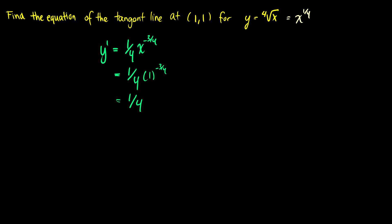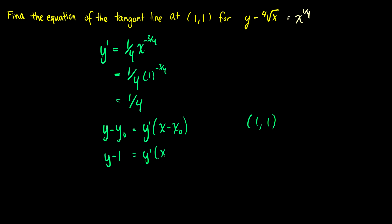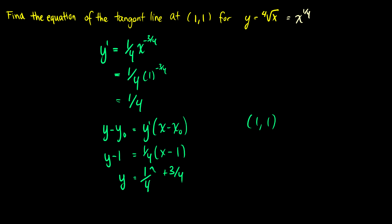Our tangent line equation is y minus y₀ equals y prime times (x minus x₀). We're looking at the point (1, 1), so y minus 1 equals (1/4)(x minus 1). Our y prime equals 1/4, so y equals (1/4)x minus 1/4 plus 1, which simplifies to y equals (1/4)x plus 3/4.